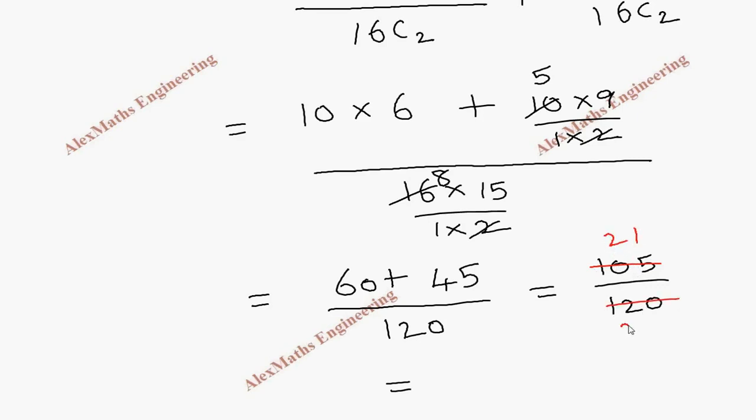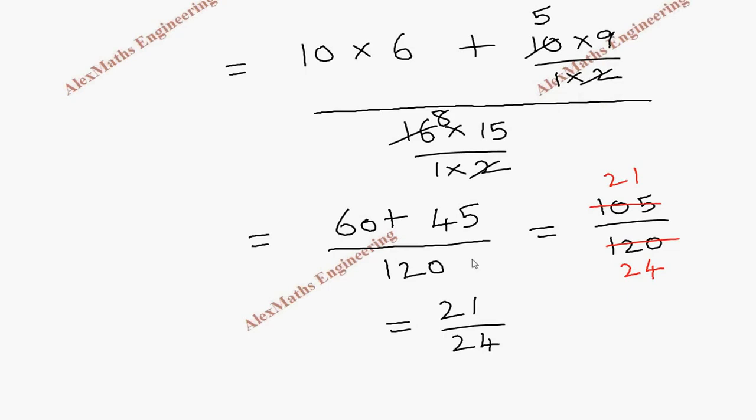And this can be further reduced by 3 table. So that is 3 times 7 is 21, and 3 times 8 is 24. So the final answer is 7 by 8.